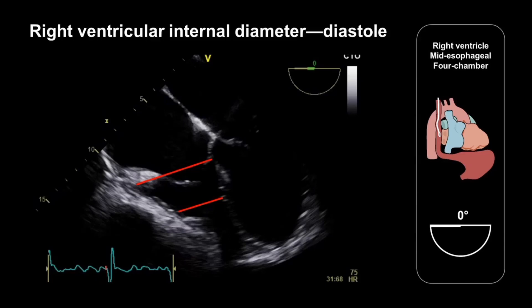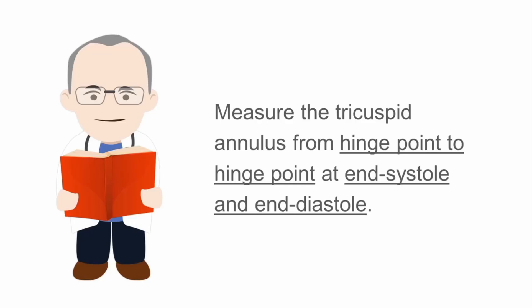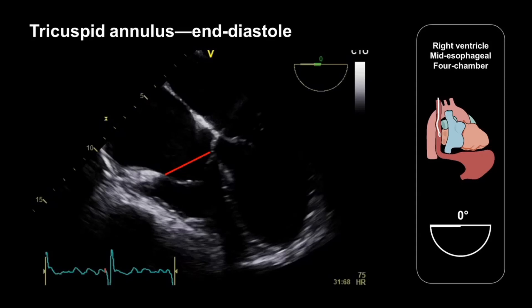If the diastolic diameter at the base is greater than 42 mm, or the mid-level is greater than 35 mm, then this indicates right ventricular dilatation. We should also measure the tricuspid annulus between the hinge points of its leaflets at both end systole and end diastole. This is a useful measurement for cardiothoracic surgeons in planning tricuspid valve repair. And this is where we make that measurement — the tricuspid annulus diameter measured between the hinge points of the leaflets at end diastole, and we use the ECG trace to time that.